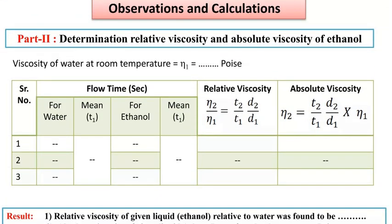Observation and calculation: Determine the relative viscosity and absolute viscosity of ethanol. Viscosity of water at room temperature η₁ in poise. Serial number 1, 2, 3 for water, mean T₁, for ethanol, mean T₂, flow time in seconds. You have to write the stopwatch values here. Relative viscosity: η₂/η₁ equals T₂/T₁ times D₂/D₁. Absolute viscosity: η₂ equals (T₂/T₁) times (D₂/D₁) times η₁.